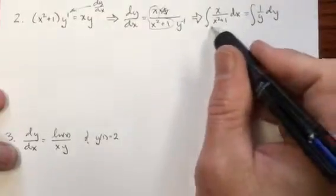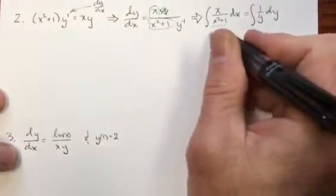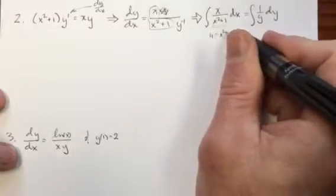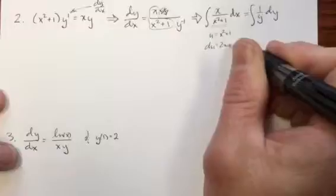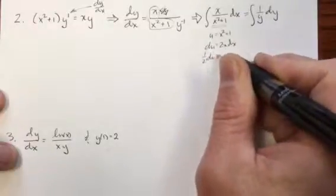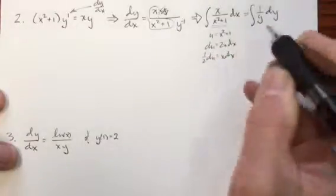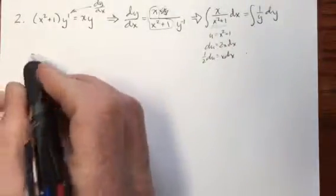This one looks like this is u substitution, where u is equal to x squared plus 1, so du is equal to 2x dx, or 1 half du is equal to x dx.